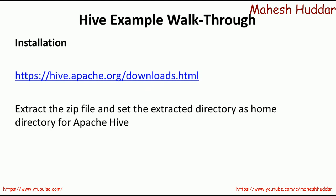Now we will take a simple example to understand HiveQL queries. To execute HiveQL queries, Hive must be installed on your machine. To install Apache Hive, first go to hive.apache.org to download Apache Hive. Once downloaded, extract the zip file and set the extracted directory as the home directory for Apache Hive. These are the three things needed: download it, extract the zip file, and set the extracted directory as the home directory for Apache Hive.